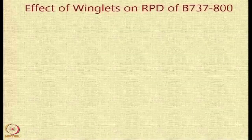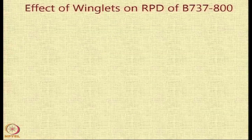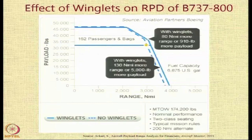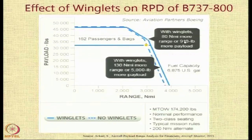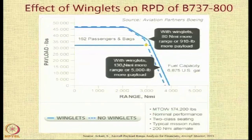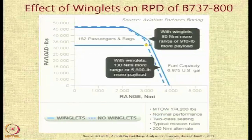Let us see the effect of winglets on the range payload diagram of the Boeing 737-800. Many airlines are installing winglets to improve fuel consumption. As this graph shows, installing winglets gives 80 nautical miles more range or allows carrying around 910 pounds higher payload in one regime, and 130 nautical miles more range or 5,800 pounds more payload in another region. Installation of winglets can thus lead to substantial improvement in operational performance.